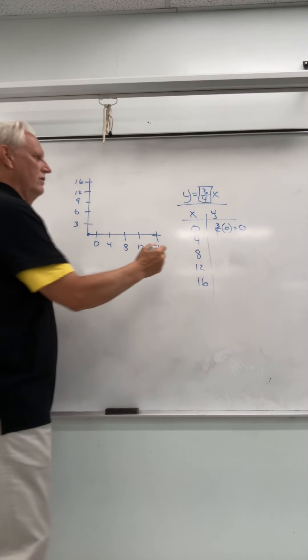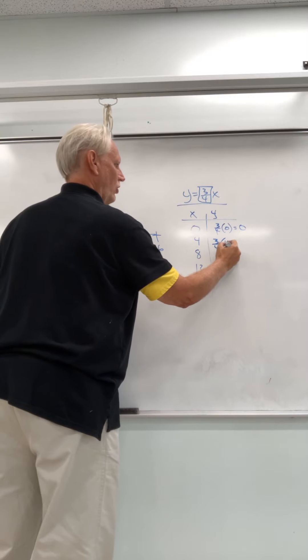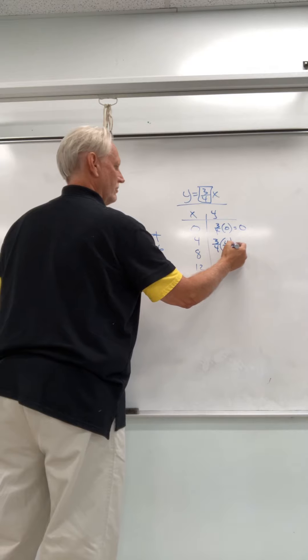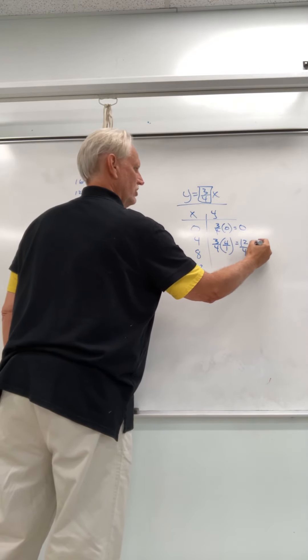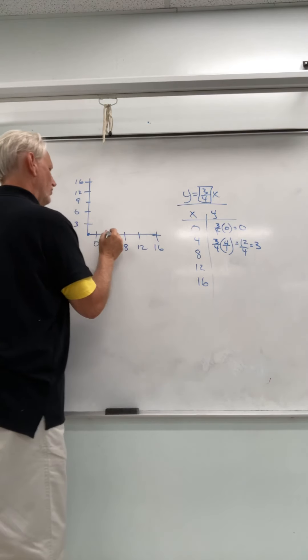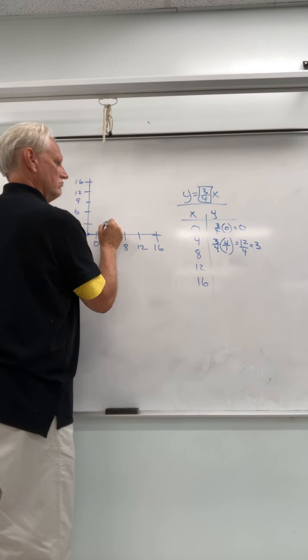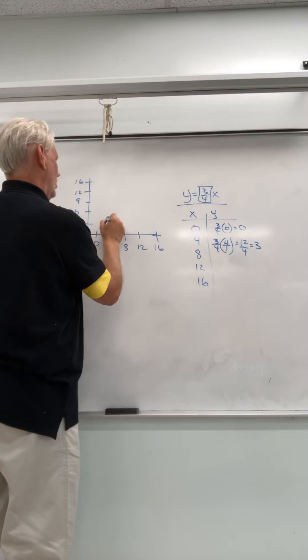My next point is going to be 3 fourths times 4 over 1. So 3 fourths times 4 over 1 is going to equal 12 over 4, which equals 3. So now this point is over 4 and up 3. Over 4, up 3.